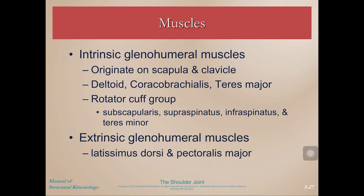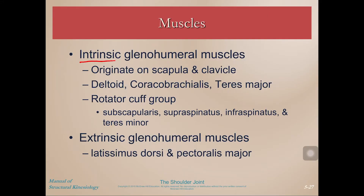We're back with the third video for the shoulder joint section. In order to understand what these muscles do, we also have to recall what the shoulder girdle muscles do, as well as the synergistic movement between the shoulder girdle and the shoulder joint. To categorize them, we have the intrinsic muscles — deltoid, coracobrachialis, and teres major — which originate on the scapula and clavicle, plus the rotator cuff group: subscapularis, supraspinatus, infraspinatus, and teres minor. The larger extrinsic muscles are latissimus dorsi and pectoralis major.